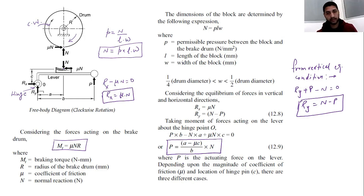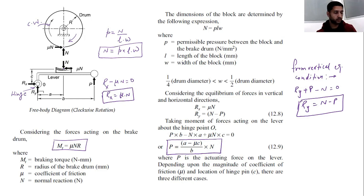Here P is the actuating force, a, b, and c are distances from the hinge, and μ is the coefficient of friction. Depending on the values of a, b, c, and their magnitudes, we have three cases.